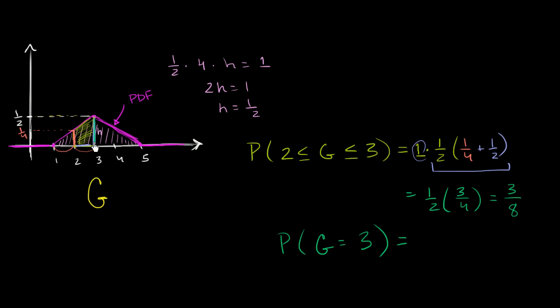So you have a rectangle with no width, has 0 area. So once again, this probability is going to be equal to 0.